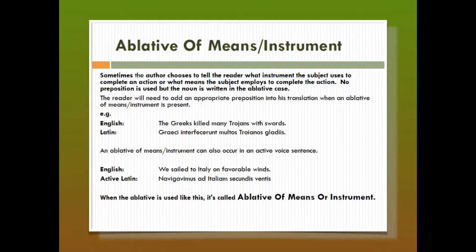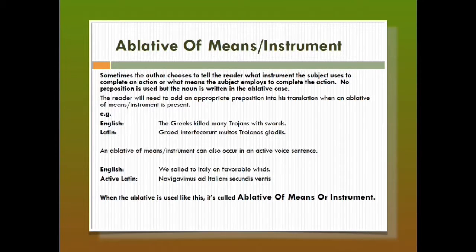You do want to try to translate the ablative when it does not have a preposition in front of it by using words like 'by,' 'with,' or 'on.' Sometimes you may even say 'by means of,' and then you'll be able to communicate the idea effectively. The first several times that we see this in writing, I will footnote for you the fact that what you are looking at is an ablative of means or instrument. And then you can come back and reference this video so you'll understand what that needs to sound like or look like in English.